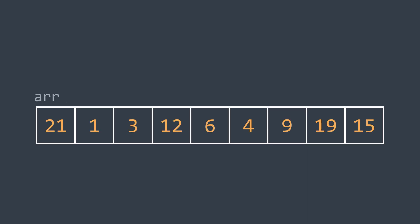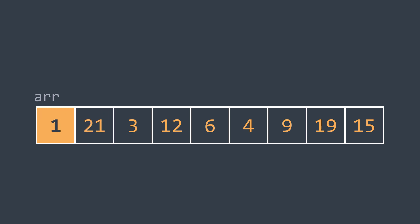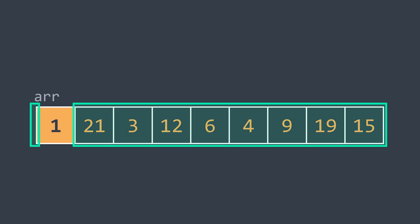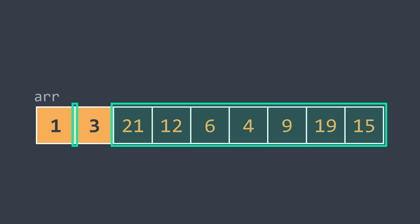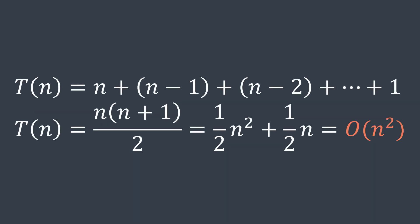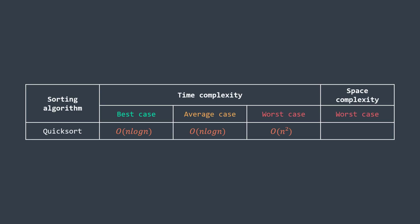The worst case occurs when we always choose the smallest or the greatest element as the pivot, because after partitioning the pivot ends up at one of the extremities of the array. This means we sort one subarray of 0 elements and one of n−1 elements, then n−2 elements, and so on. The total cost becomes n + (n−1) + (n−2) + … + 1, which gives O(n²) time complexity. However, this case rarely happens — especially if we optimize pivot selection — so the average time complexity of quicksort is O(n log n).